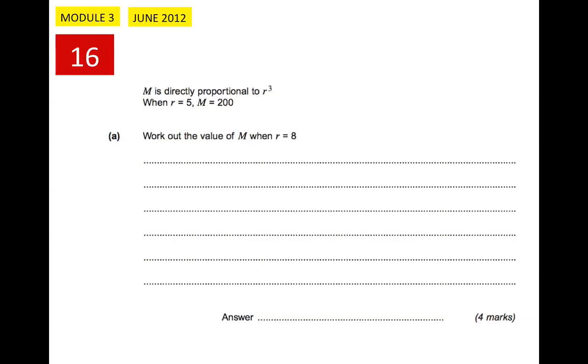Here is an exam question about proportion. It says that M is directly proportional to r cubed. When it's directly proportional, it means that M is something times r cubed, which quite often conventionally we use k for that, so M equals k times r cubed. It doesn't have to be k, but often is conventionally, so I'm going to use that.